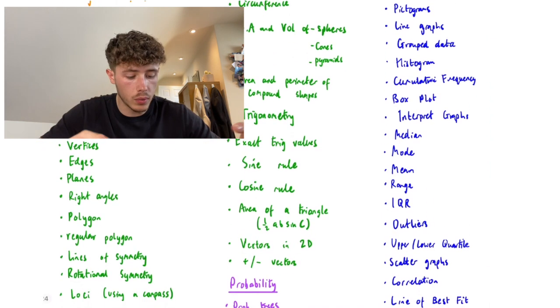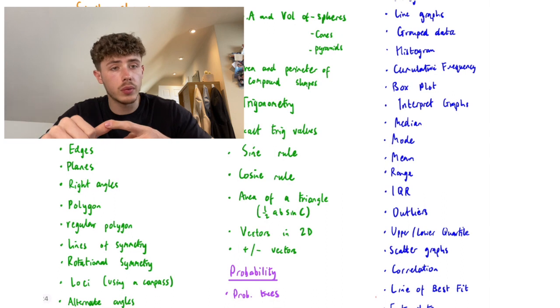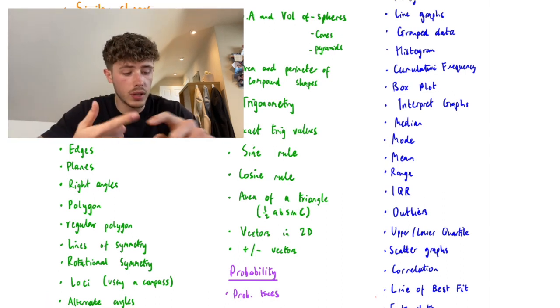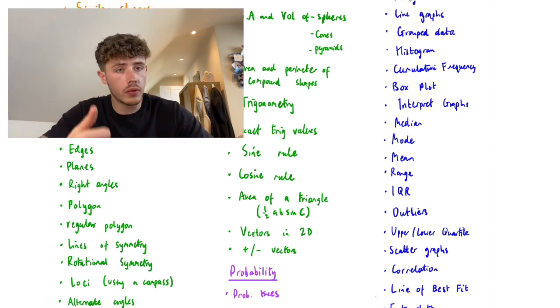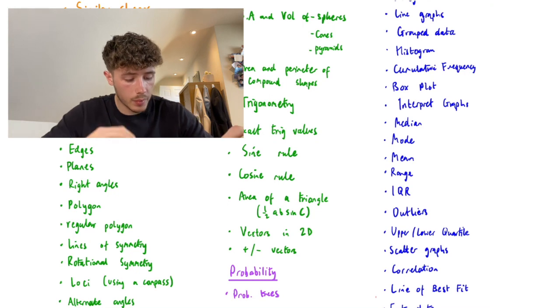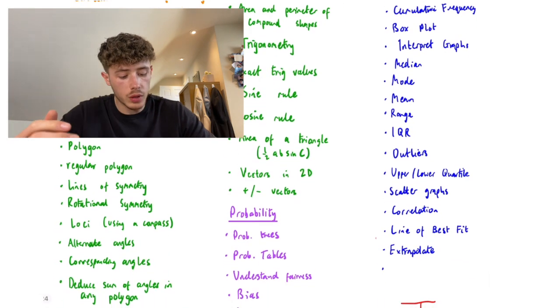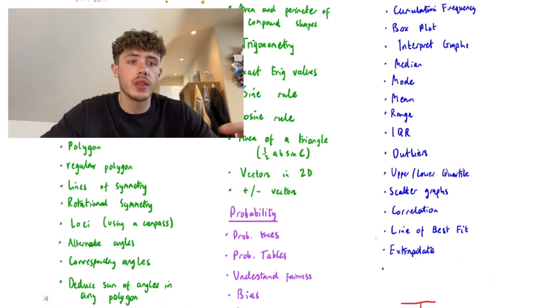Mean, median, mode, and range is a classic one - make sure you know that within a frequency table and on a sequence. Interquartile range, IQR, so that could be lower and upper quartiles as well, as well as outliers, identifying outliers within some data.